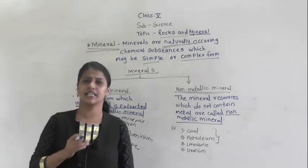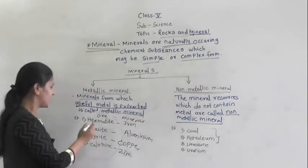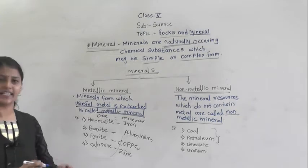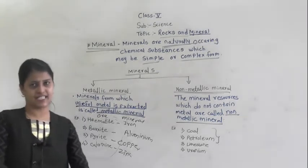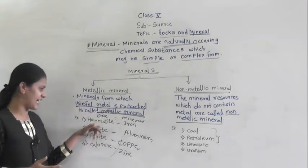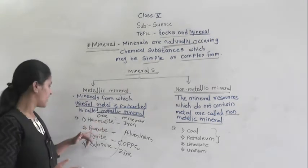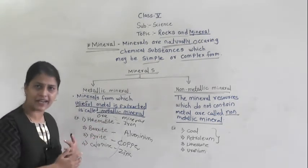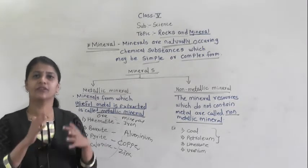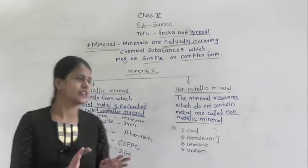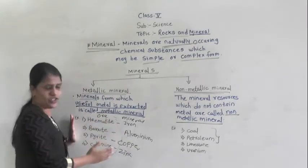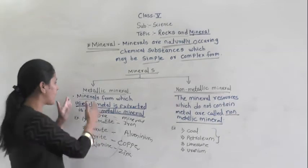For example, hematite, bauxite, pyrites, and calamine — these are metallic minerals. The minerals from which we get metals are called ores.